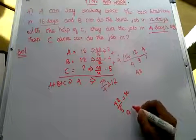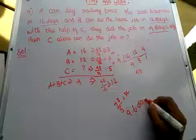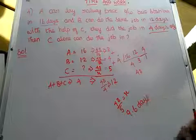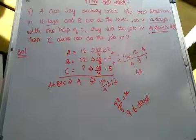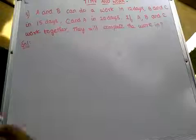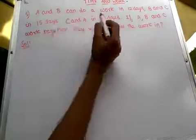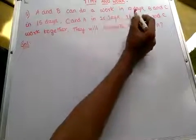48 divided by x equals 5, so x equals 48/5. The answer is 9.6 days.